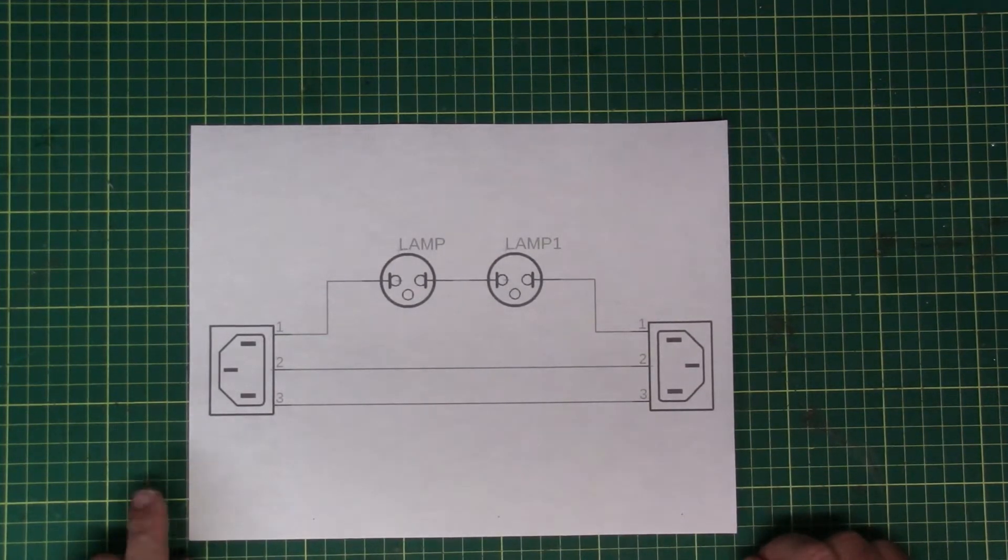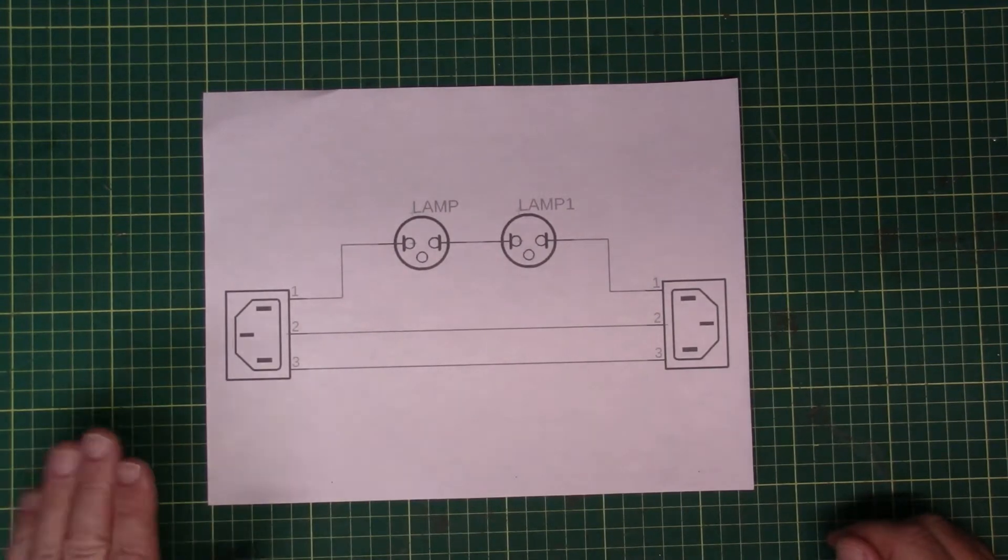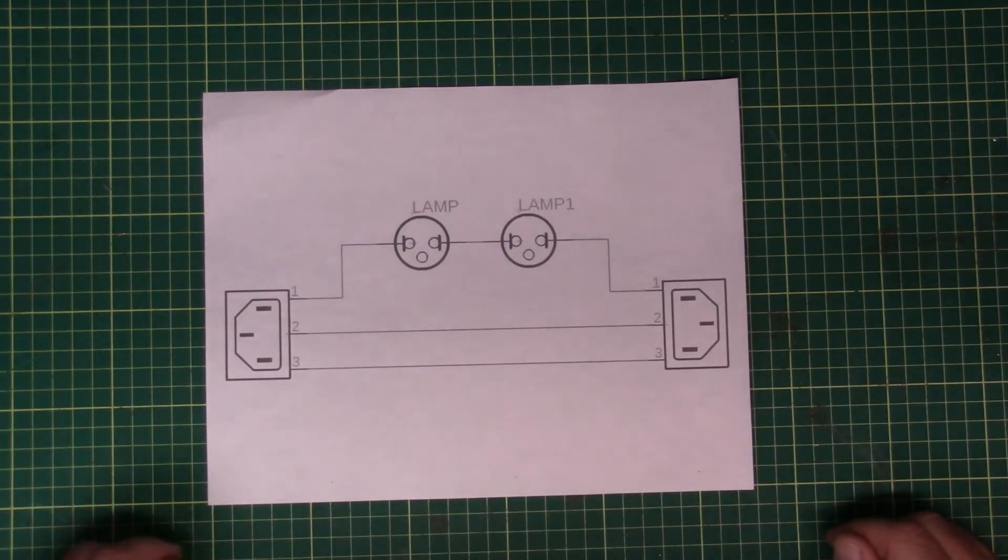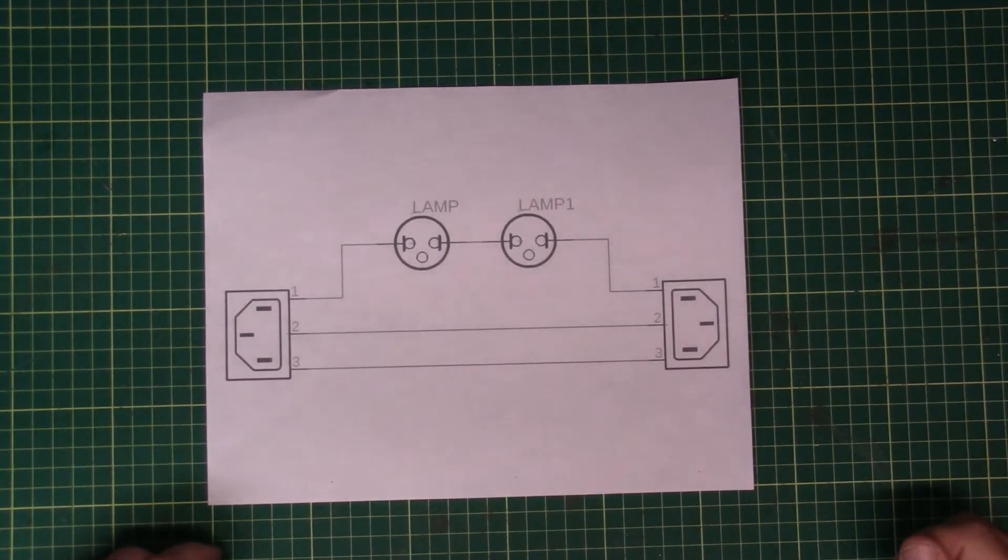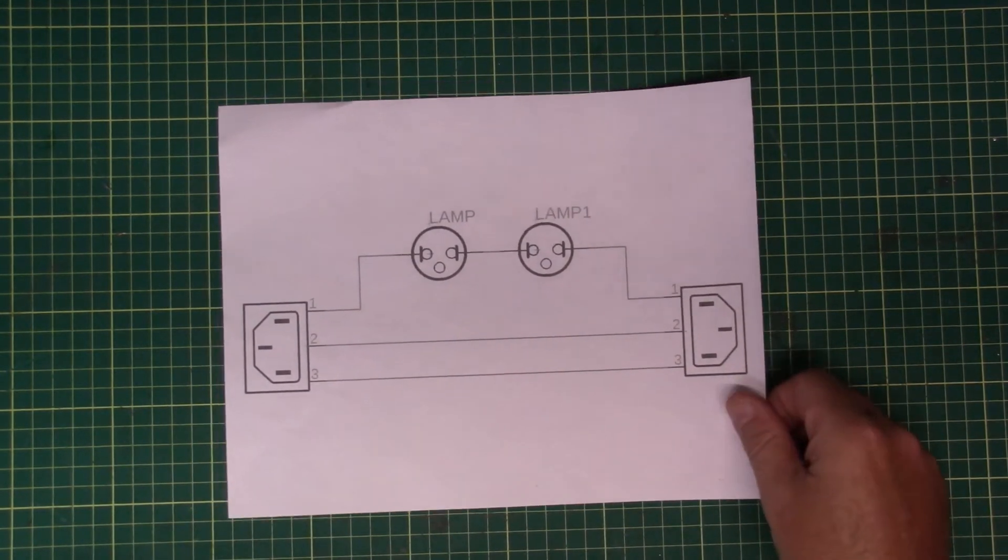But first, I think it's a good idea to review and explain exactly how a dim bulb current limiter works. So let's start this examination by taking this version of the dim bulb current limiter and breaking it down into its basic form, which would be this.